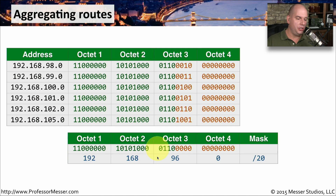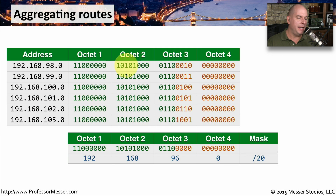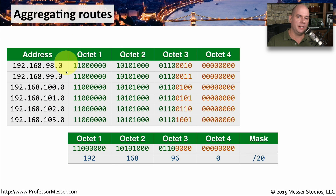We've separated those by colors and can now decide where to summarize. We take this separation and at the dividing point, everything else becomes a 0. If we take that binary and convert it back to decimal, we're able to summarize all of this as 192.168.96.0. We then count the bits that are identical across all routes: 8, 16, 17, 18, 19, and 20 bits in total are identical, which means we can use a mask of /20 to summarize. So instead of putting all of these separate addresses in a routing table, we can put one single route and point it to the next hop.